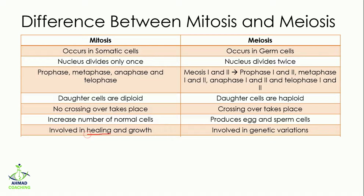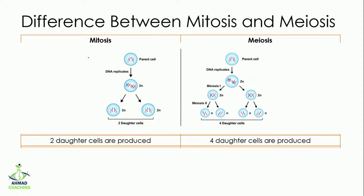Mitosis is involved in healing and growth, while meiosis is involved in genetic variation — meaning the offspring will be different from the parents. Meiosis is also important to stabilize the number of chromosomes. In mitosis, two daughter cells are produced, while in meiosis four daughter cells are produced because there are two nuclear divisions.